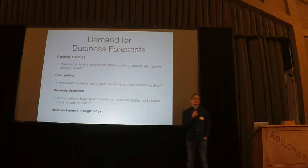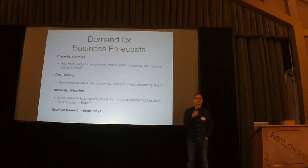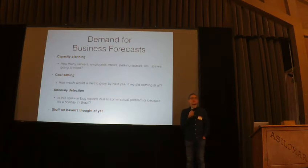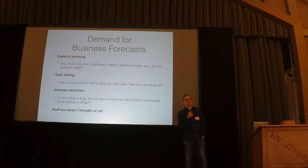Almost every team at Facebook sets a goal for their half relative to some baseline. You can't just say I want this to grow by 5% if it's already growing at 10%. So forecasts are really useful for that kind of application. Then we have anomaly detection applications — is something that's happening right now weird relative to what we've seen in the past? That also requires having a forecast. And once you make forecasting easier for people to do, people come up with all kinds of other applications we really didn't anticipate.